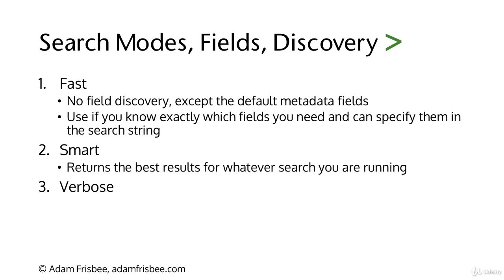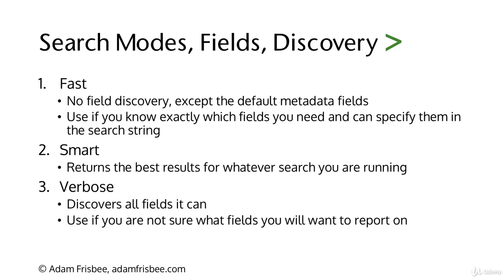Smart Mode attempts to return the best results for whatever search you're running. It attempts to detect and return interesting fields. And Verbose Mode uses the Splunk engine to detect and return all of the fields. Verbose Mode is slow, but useful if you're not sure what fields you will want to report on, if the dataset is, for example, unfamiliar to you.